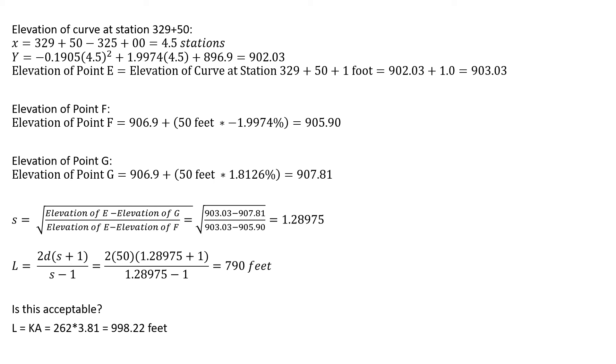We can check with our L equals K times A equation. Our K rate of vertical curvature is 262. Our algebraic difference in grades, A, is 3.81. We're just taking the difference between G1 and G2, and that gives us a length of just at 1000 feet, 998.22 feet. The original design took this into consideration. They chose a length that was slightly larger than this minimum length that is given. So we cannot use 790 feet with the other parameters of this curve.